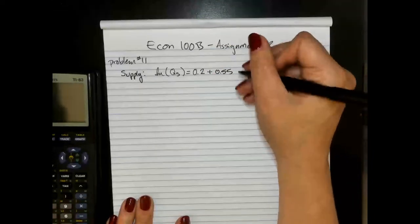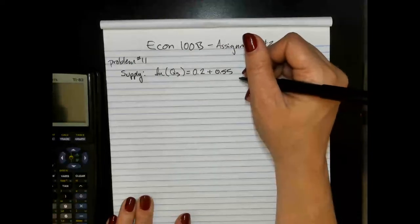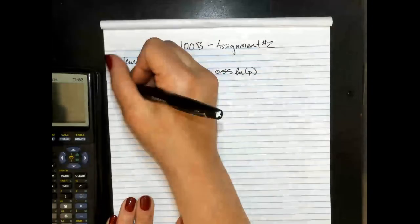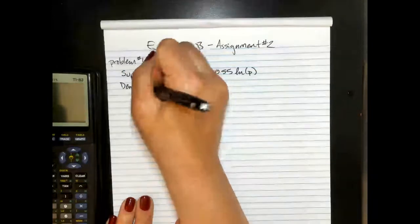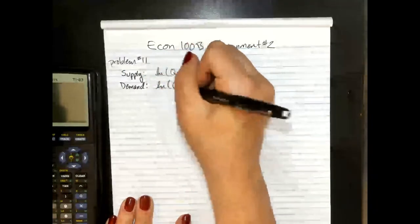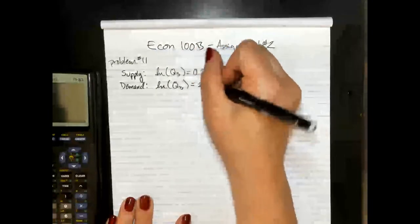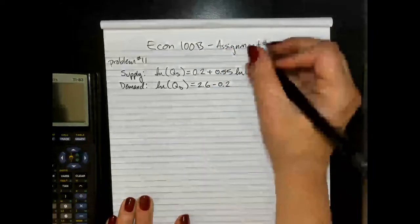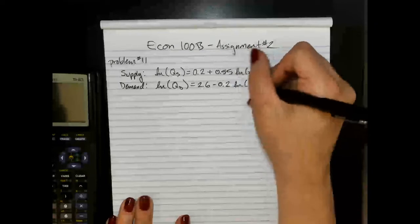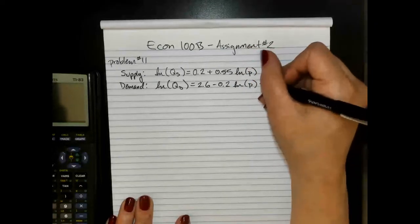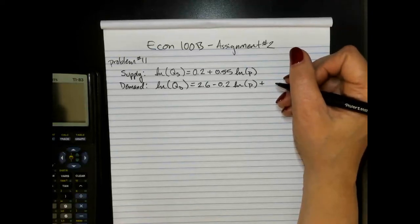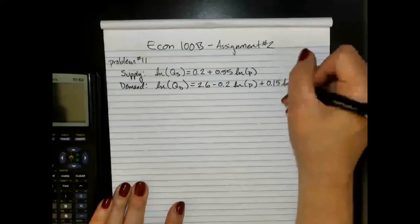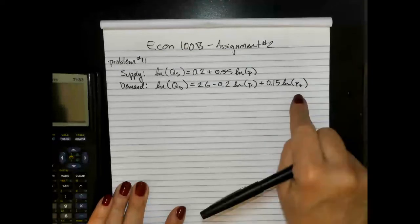So supply: the natural log of quantity supplied equals 0.2 plus 0.55 times the natural log of price. And the demand function: the natural log of quantity demanded equals 2.6 minus 0.2 — that negative slope makes sense for a demand curve, positive for supply — times the natural log of price. We also have a non-price determinant of demand: the price of tomato paste, which is the natural log of PT, and that's our variable of interest.